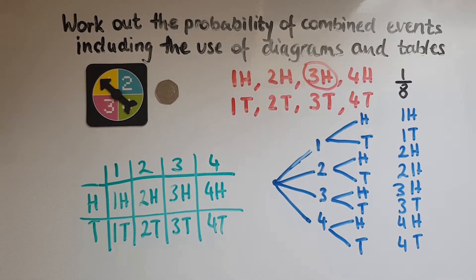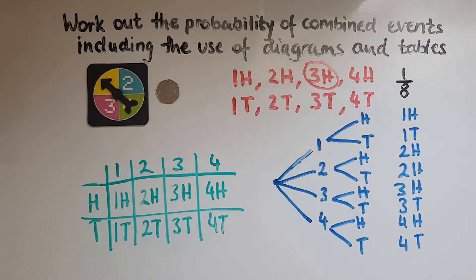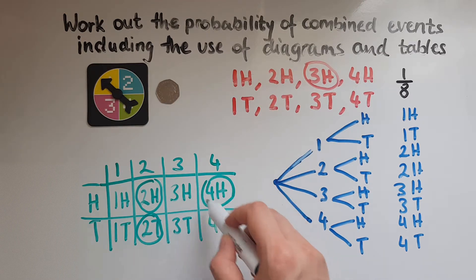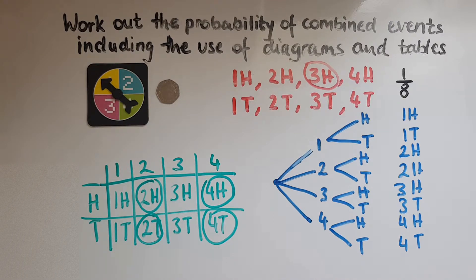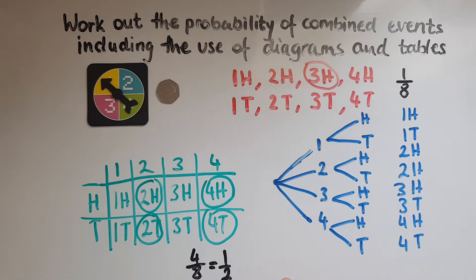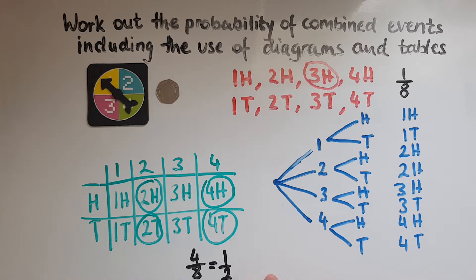Or, what is the probability of getting even numbers? Looking at the diagram, where are the even numbers? We've got two and heads, two and tails, four and heads, and four and tails — so that's four out of eight possible outcomes, which is the same as a half. So the probability of getting even numbers is a half. And the probability of getting odd numbers would also be a half, because all the different outcomes add up to one, and if the numbers are not even, they're going to be odd.